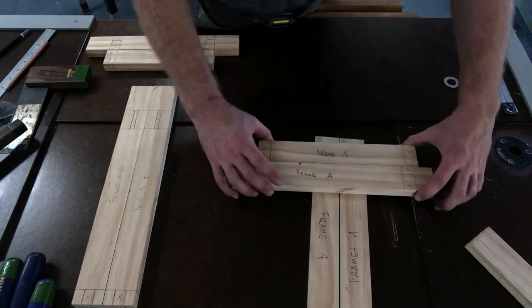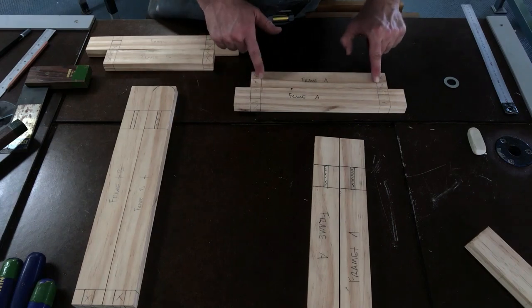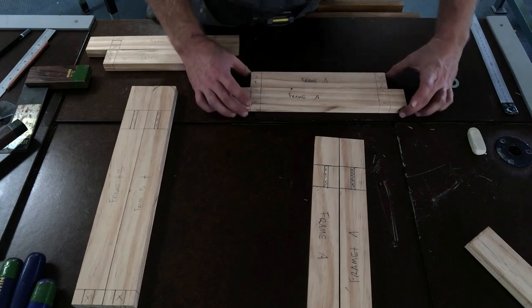And then also for the top, just make sure that the insides of the tenons match up with the bridle joints on the top of your rail.